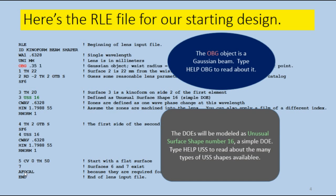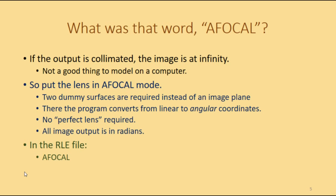And we're going to model the DOEs as unusual surface shape 16, which you can also read about in the help file. Okay, what was that word, afocal? Well, the output from our lens is going to be collimated. That means the image is at infinity, and it's a real bad idea to try to model infinity with a digital computer, so we have to do things differently. We put the lens in what we call afocal mode, and in that mode, you need two dummy surfaces at the end instead of just one image plane, and that's where the program converts from linear to angular coordinates. Now, you don't need to add any kind of perfect lens to the system to get that, because that happens automatically if you're in afocal mode. The image output is in radians, it's in angles, and in the RLE file, you just give a declaration afocal.